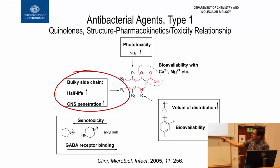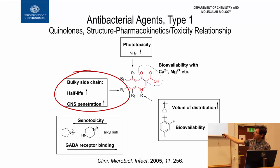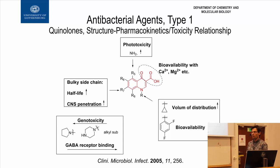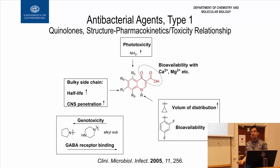There's also something I call CNS penetration — CNS stands for central nervous system. If you have bacteria in your central nervous system, we need an antibiotic that can enter it. By increasing the size and bulkiness here, we get more and more CNS penetration. This illustrates again that we can tune the properties of the drug — how it travels around the body. These functional groups partly describe the structure-activity relationship, and the same groups are also responsible for toxicity and the physical distribution properties of the drug.